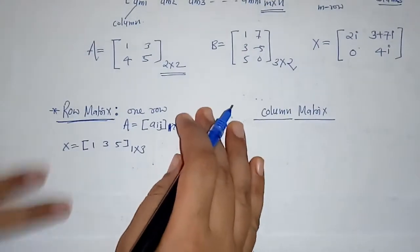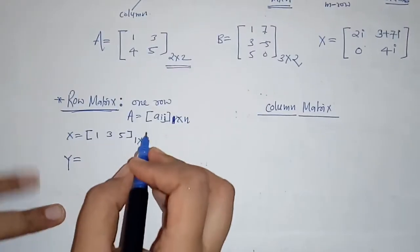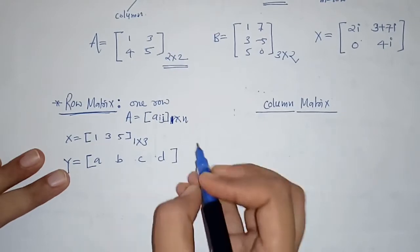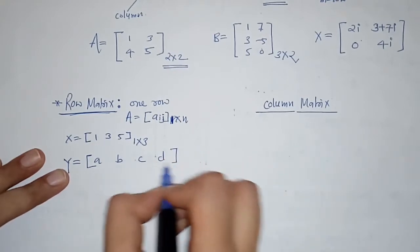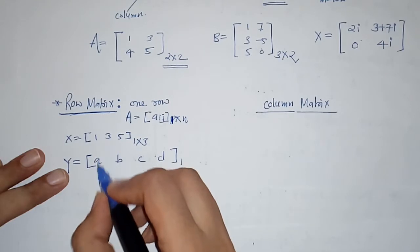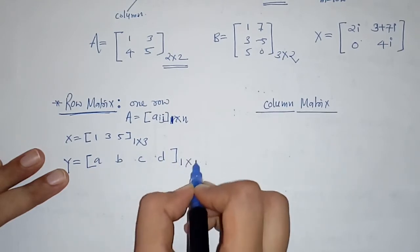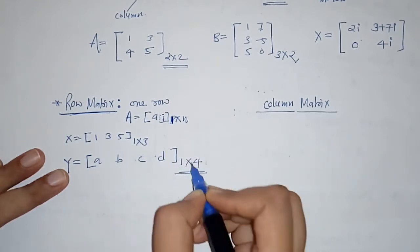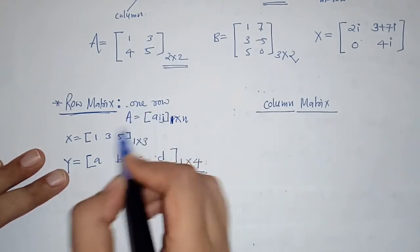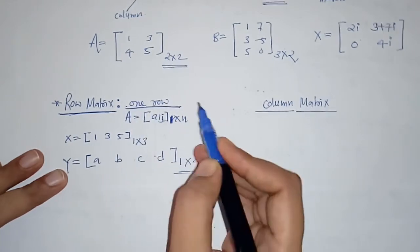We can take another example here. If we have a matrix with elements A, B, C, D — how many rows? We have only one row, and how many columns? 1, 2, 3, 4. So this is a matrix of order 1 by 4. These are row matrices having only one row.